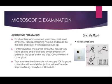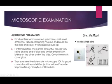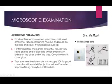The third type is microscopic examination. The first variety is the direct wet preparation. For dysenteric and unformed specimens, a small amount of feces containing mucus and blood is placed on the slide and covered with a cover slip. For formed stools, a small amount of feces is mixed with saline on one end of the slide, and on the other end a similar amount is mixed with iodine. Both ends are covered with a cover slip.